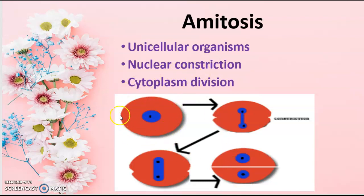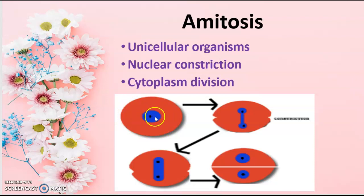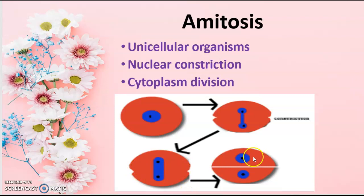This is the parent cell — a unicellular organism. This is the cytoplasm, the center one is the nucleolus, and this one is the nucleus. First, the nucleus gets divided, followed by the cytoplasm starting to divide. Finally, it produces two daughter cells. So it occurs directly, which is why it is called direct division, known as amitosis.